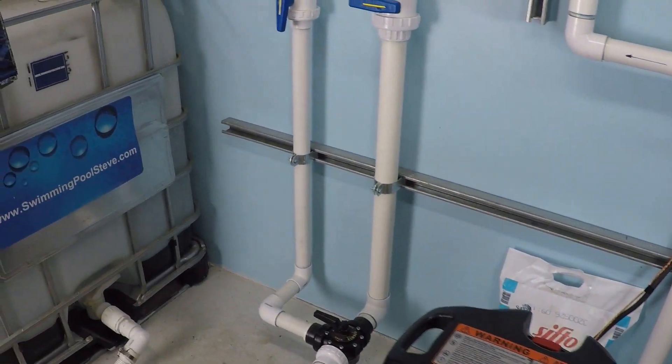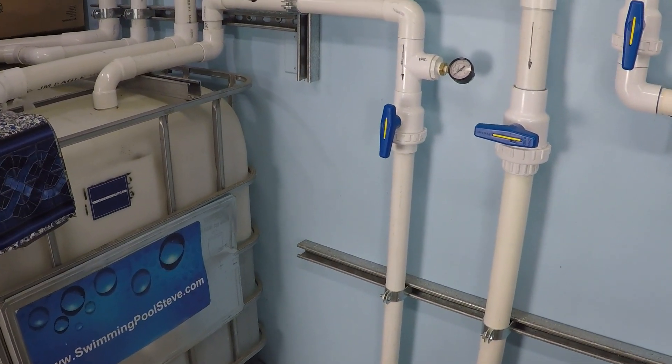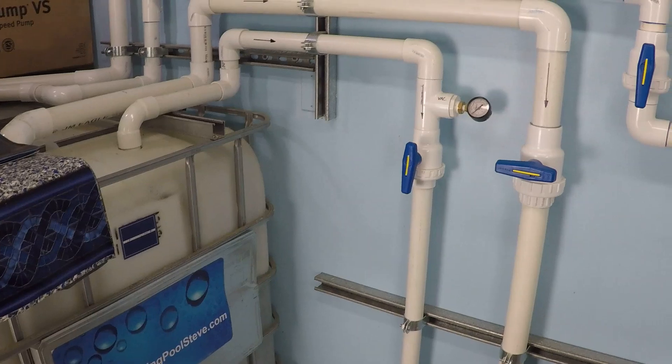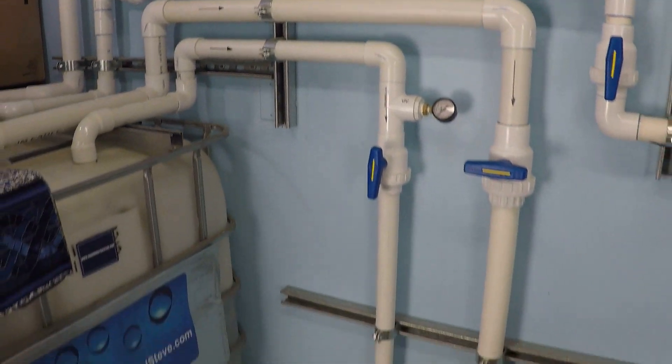This is kind of a worst case scenario because this is a really big pool, but on this setup we only have a single inch and a half suction line and a single inch and a half discharge line and we'll be monitoring the flow rate through that yellow flow meter.